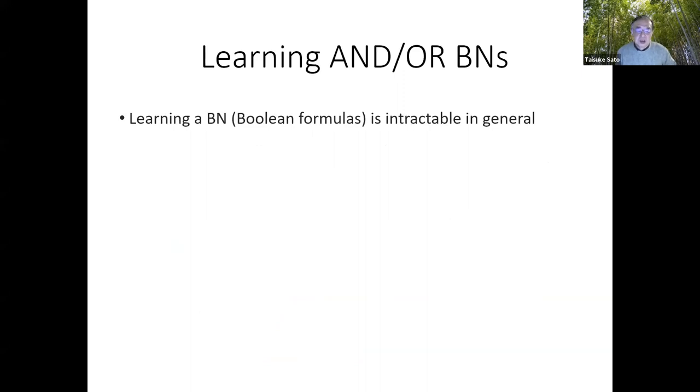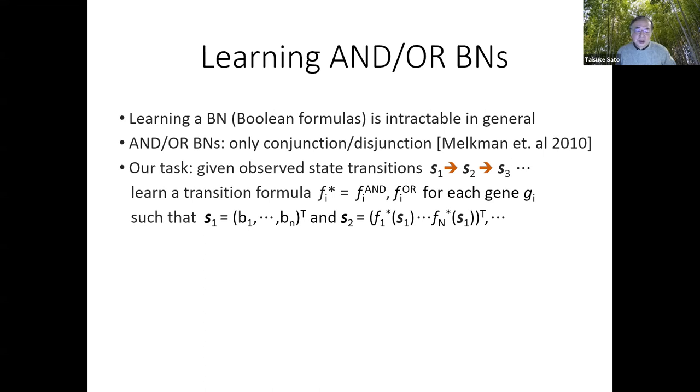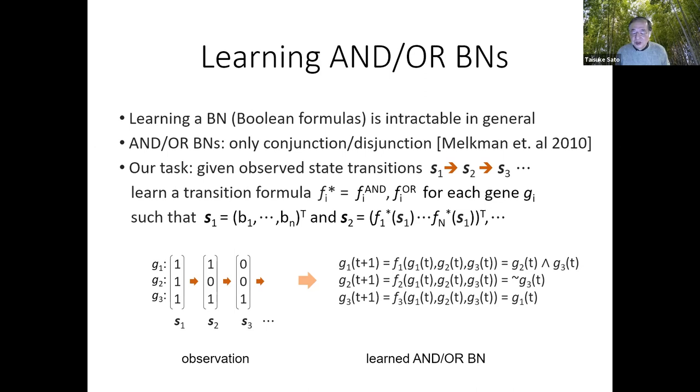Now think of learning. Learning Boolean networks means learning a lot of Boolean functions or Boolean formulas. But learning Boolean function is intractable in general. So we restrict Boolean networks to AND/OR Boolean networks that only contain conjunctions and disjunctions. Our task is that given a sequence of the state transition, S1, S2, S3, and so on, we learn a transition formula Fi that being a conjunction or disjunction for each gene i, such that the transition formula reproduces observed state transition sequence. Given the left hand side, we learn the right hand side, that's our task.